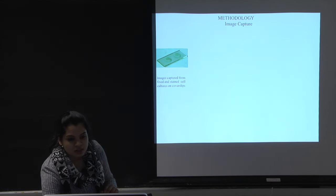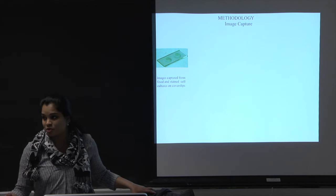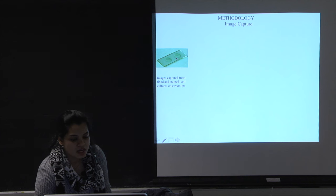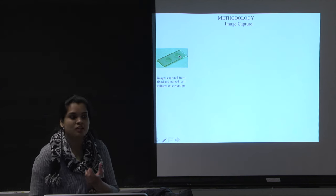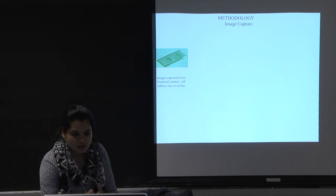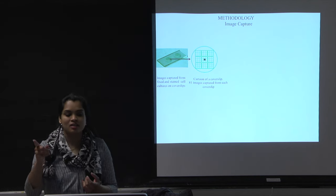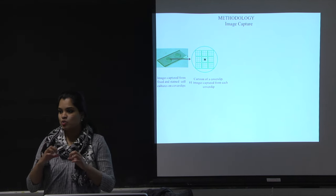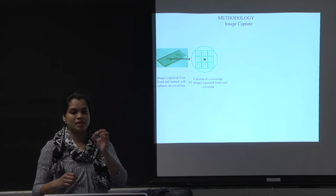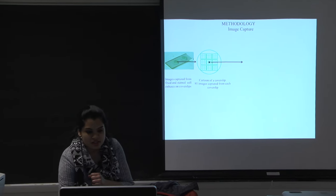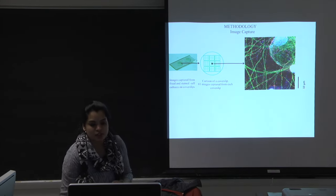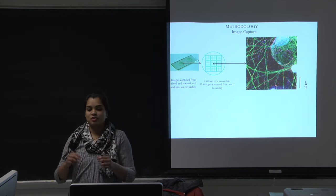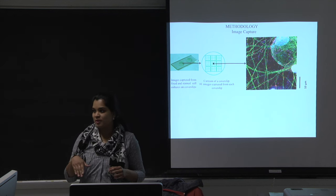I want to quickly walk you through how I captured the images. Here you see two cover slips with the neural networks fixed and stained. For each cover slip, I divided it into 81 square grids and captured images from each of those grids. Here I'm showing one such image from a grid — its dimensions are 50 micrometers by 50 micrometers.